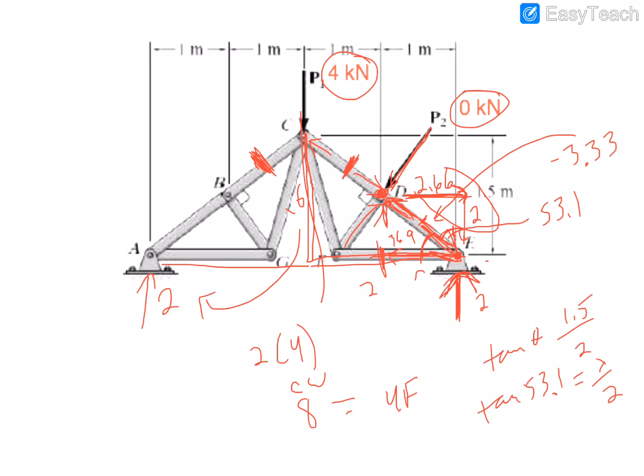This will also be the 3.33, negative 3.33, which is the other one you are supposed to find. So both answers, this member and this member here, would be a negative 3.33 or positive 3.33.